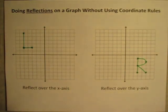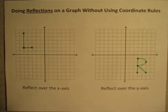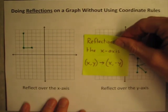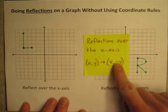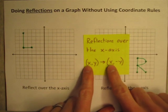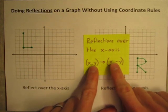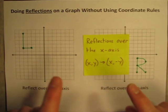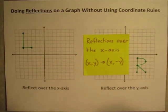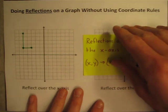In this video, I'd like to show you how to do reflections on a graph. There are different ways that you can do these reflections, and sometimes it might be convenient to use coordinate rules. For example, I could take the coordinates of all these points and apply a rule — leaving the x coordinate the same and changing the y coordinate — on each of the points, create a list of new points, plot those on the graph, and it should be a perfect reflection.